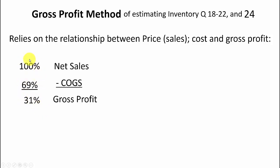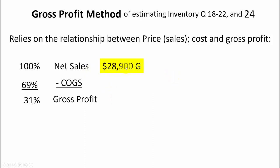That is the key to understanding this gross profit method. Remember, this is just an estimating method — it estimates what inventory is, but it usually is very, very close. So if you were given sales of $28,900, you could easily figure out cost of goods sold in dollars, because you know it's going to be 28,900 times 69%, or 17,900.